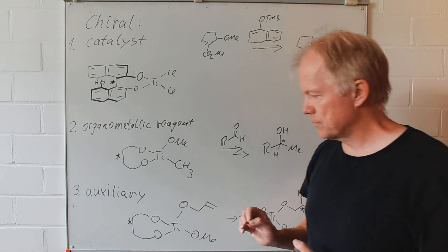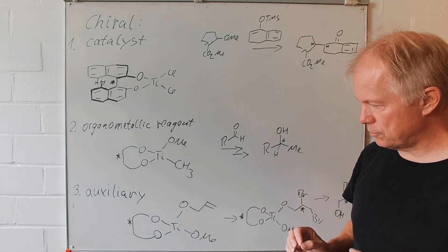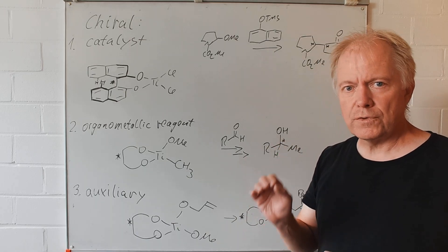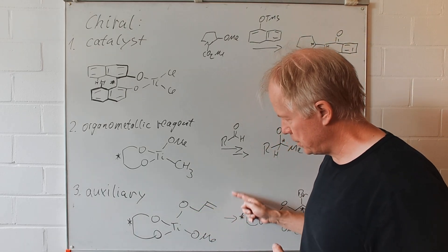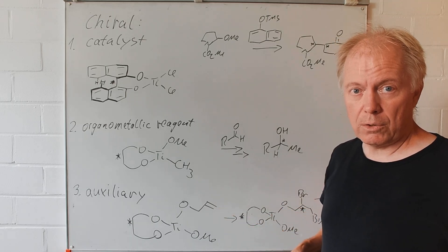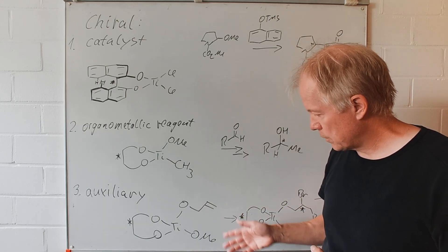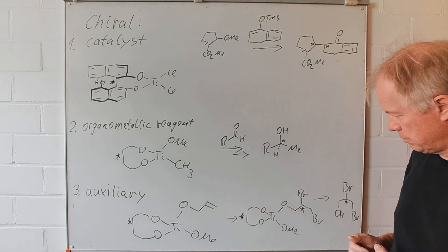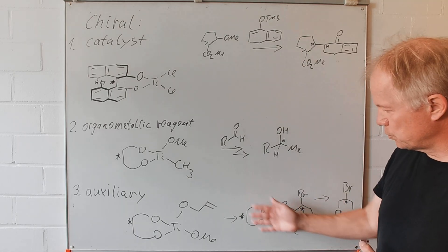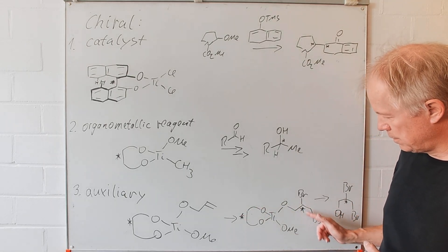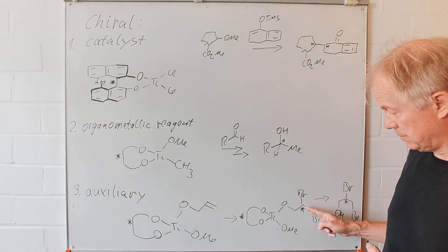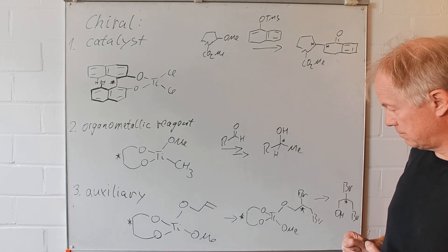What about a chiral auxiliary? For a chiral auxiliary we need a chiral moiety which is covalently bound to the other moiety where we intend to perform our reaction, our transformation. For instance, in this case just adding one equivalent of bromine. This would be the result. Here the chiral axis. Here a newly formed chiral center, hopefully with some excess.